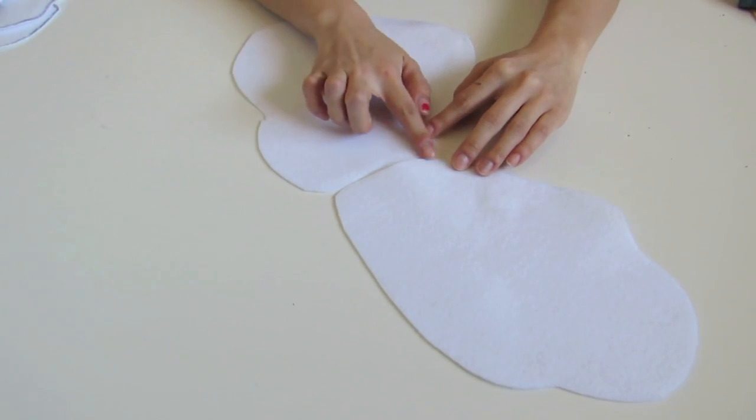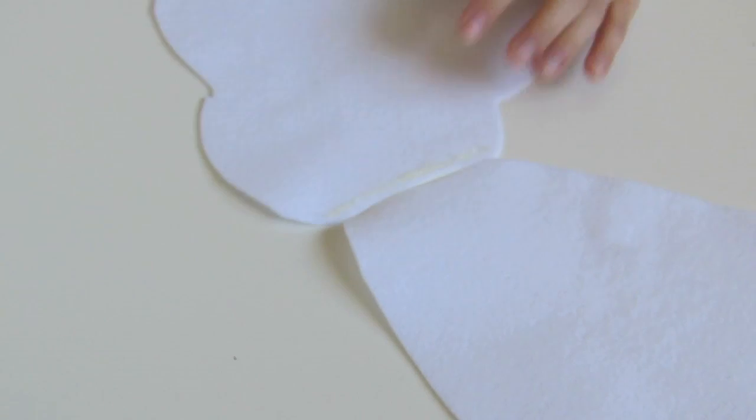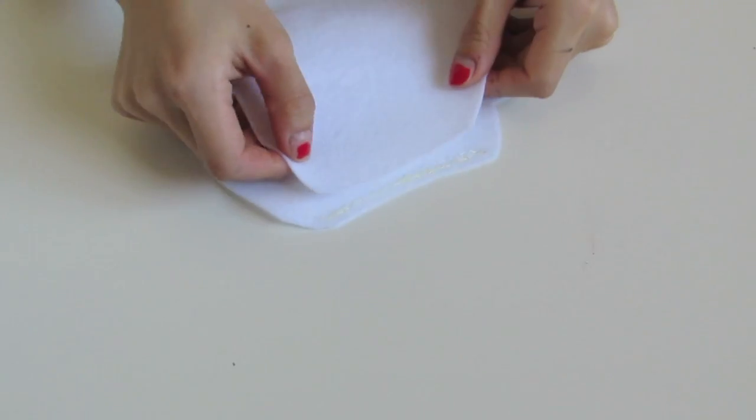Alright, so now we're just going to be gluing the head piece and the body piece together. Just put a little bit of glue on the border and then flip the head over. It's gonna create this little bit of an inseam.